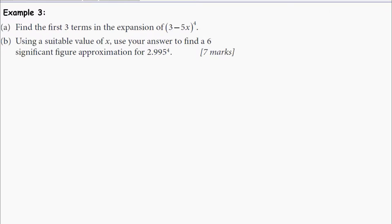In part A of this example, we are required to find the first three terms in the expansion of (3 - 5x)^4. And then in part B, using a suitable value of x, we are required to use our answer to find a 6 significant figure approximation for 2.995^4.